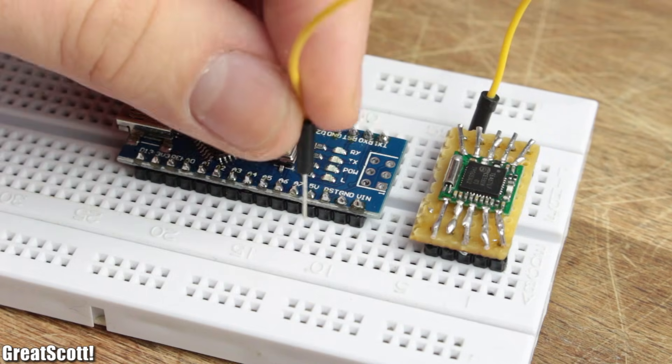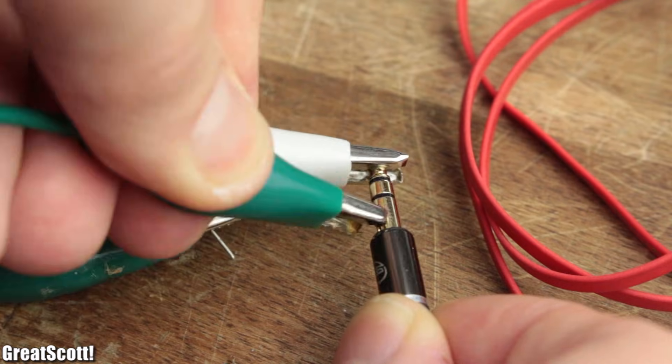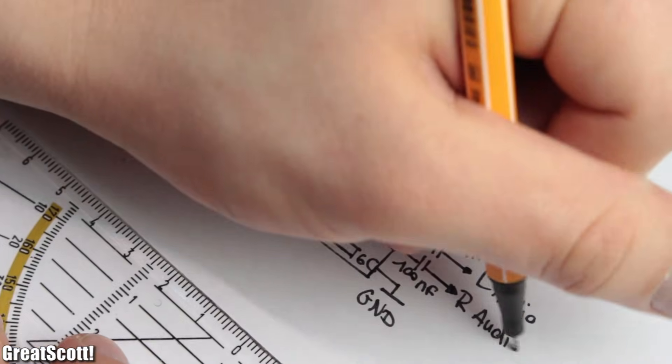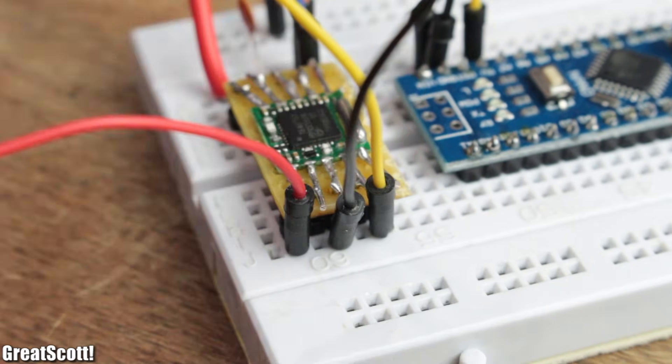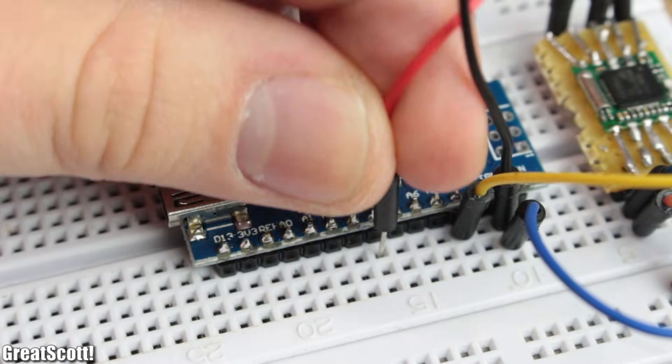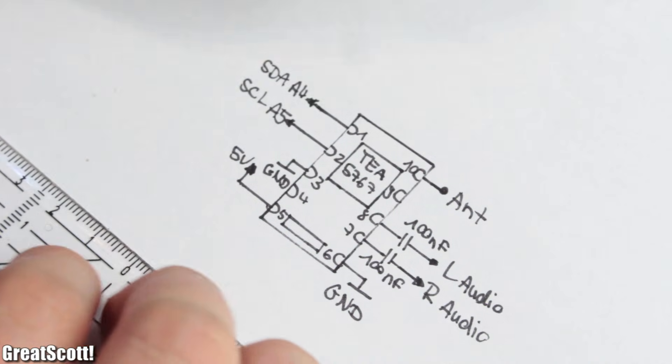fixed the IC on the board with hot glue, and finally connected the male header with the pins through silvered copper wire. Then I connected ground, 5 volts, the antenna, and the audio output to my headphones according to my small schematic. The two I²C pins